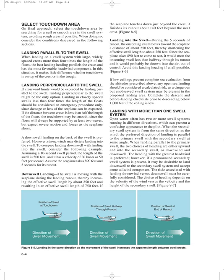If low ceilings prevent complete sea evaluation from the prescribed altitudes, any open sea landing should be considered a calculated risk, as a dangerous but unobserved swell system may be present. Complete the descent and before-landing checklist prior to descending below 1,000 feet if the ceiling is low. Open water often has two or more swell systems running in different directions, which can present a confusing appearance to the pilot. When the secondary swell system is from the same direction as the wind, the preferred direction of landing is parallel to the primary swell with the secondary swell at some angle. When landing parallel to the primary swell, the two choices of heading are either upwind and into the secondary swell, or downwind and downswell. The heading with the greatest headwind is preferred; however, if a pronounced secondary swell system is present, it may be desirable to land downswell to the secondary swell system and accept some tailwind component.